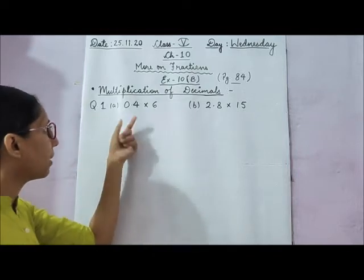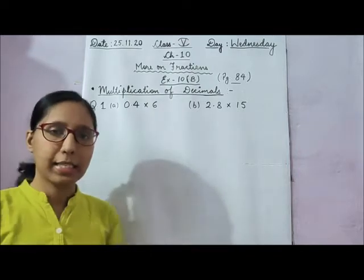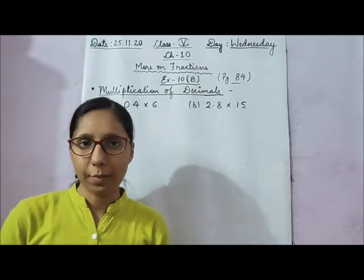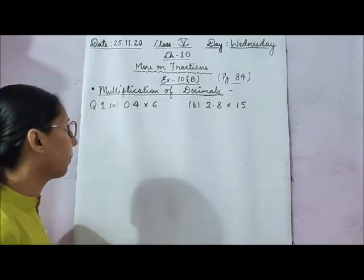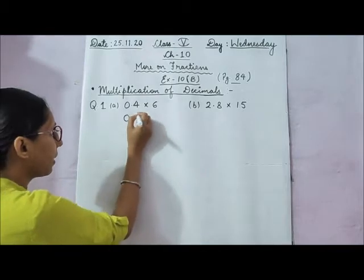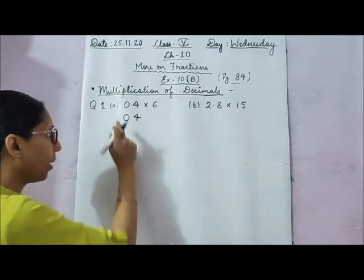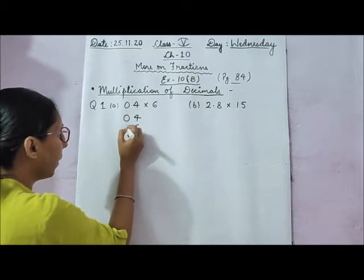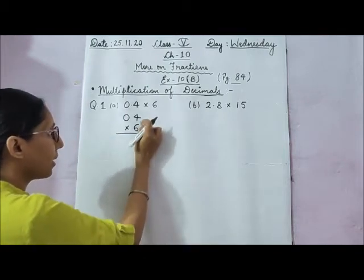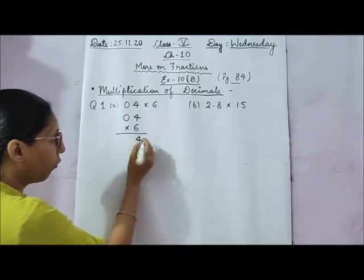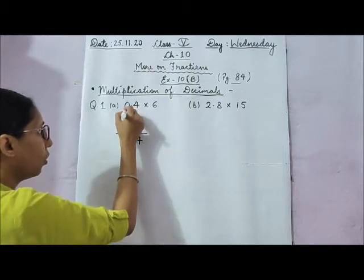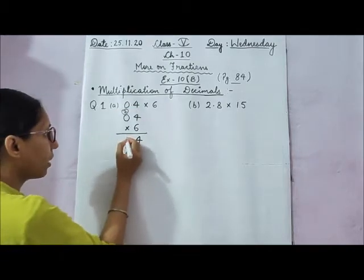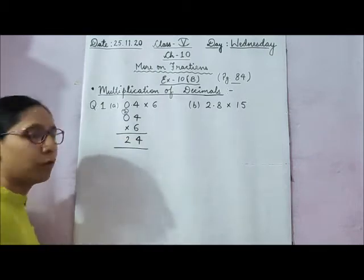Question number 1, part a is 0.4 multiplied by 6. When we do a multiplication of decimals, we will multiply as a whole number. So we have to write 0.4 not as 0.4 — we remove the point. Then we multiply by 6. So 6 times 4 is 24: write 4, carry 2. 6 times 0 is 0, plus 2 is 2. So this gives us 24.